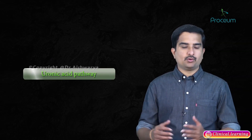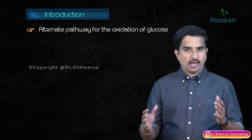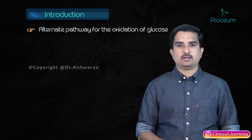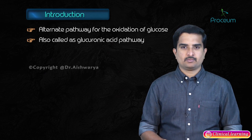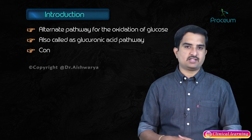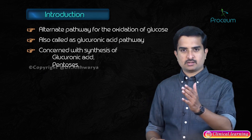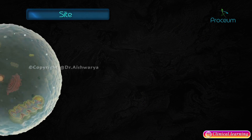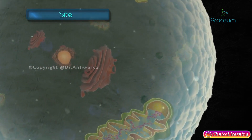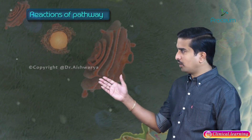The next topic is the uronic acid pathway. It is an alternate pathway of the oxidation of glucose, like the HMP pathway. This pathway is also called the glucuronic acid pathway and is mainly concerned with the synthesis of glucuronic acid, pentoses, and ascorbic acid, which is vitamin C. The site of this pathway is the cytosol.